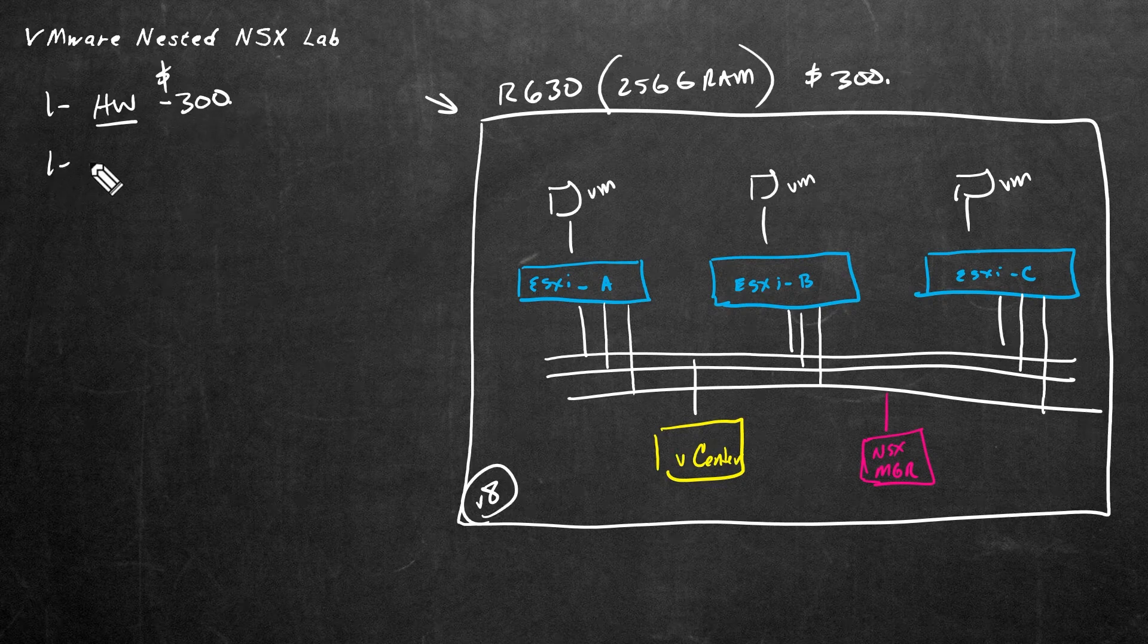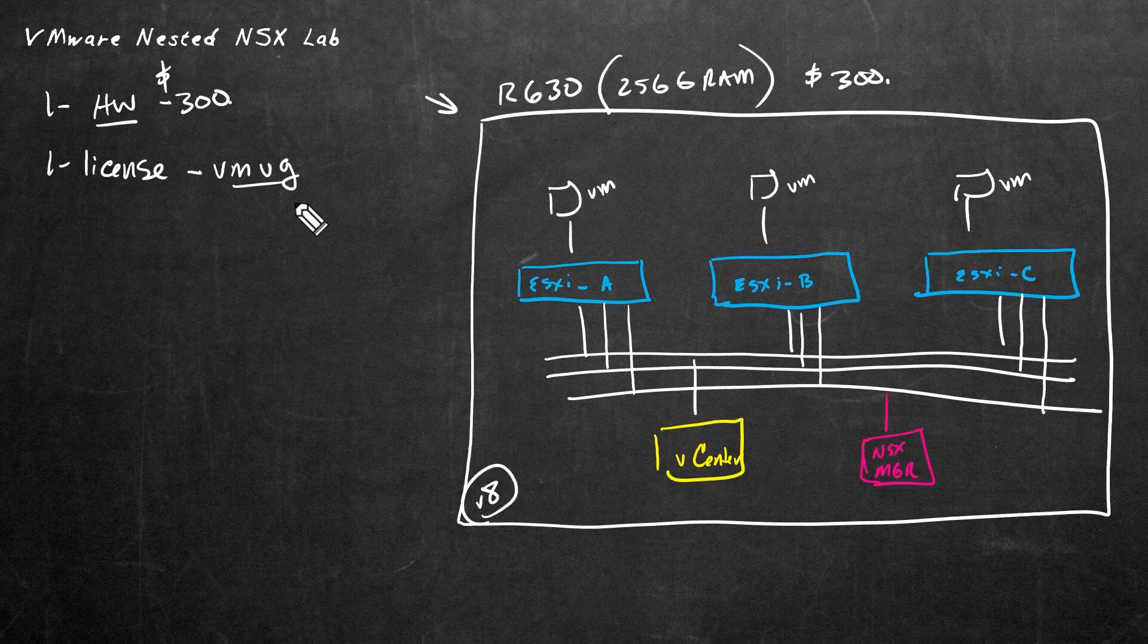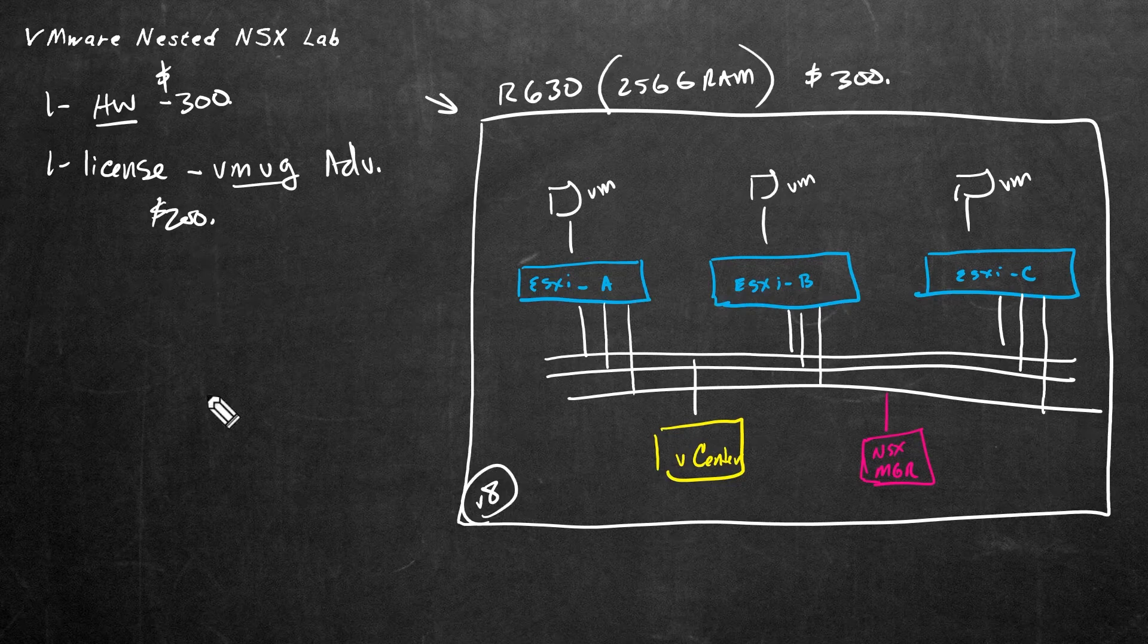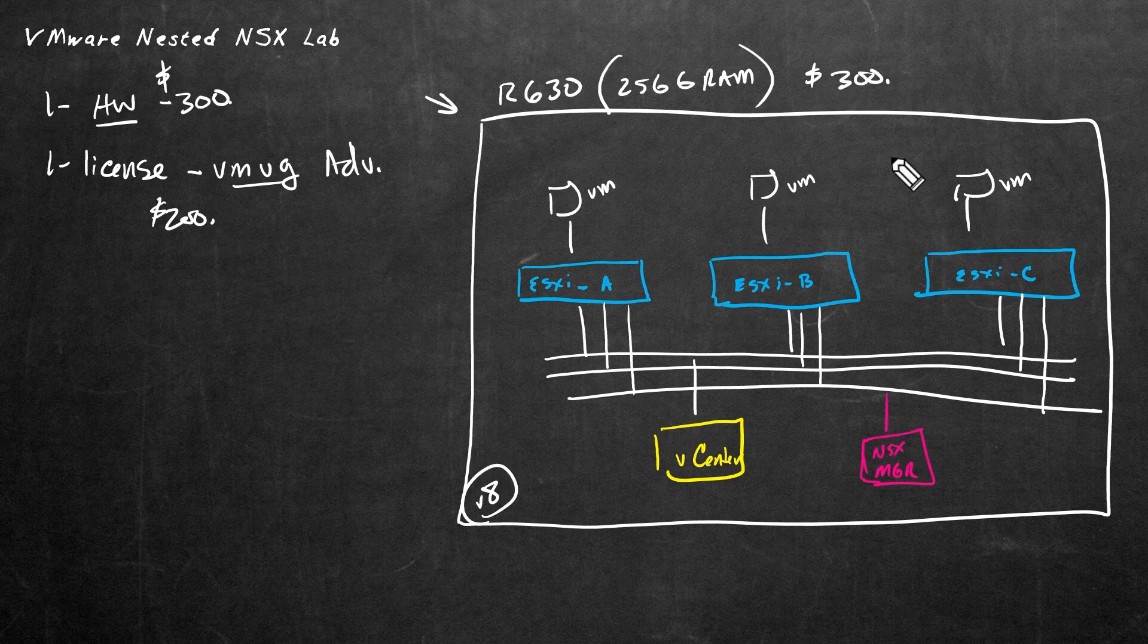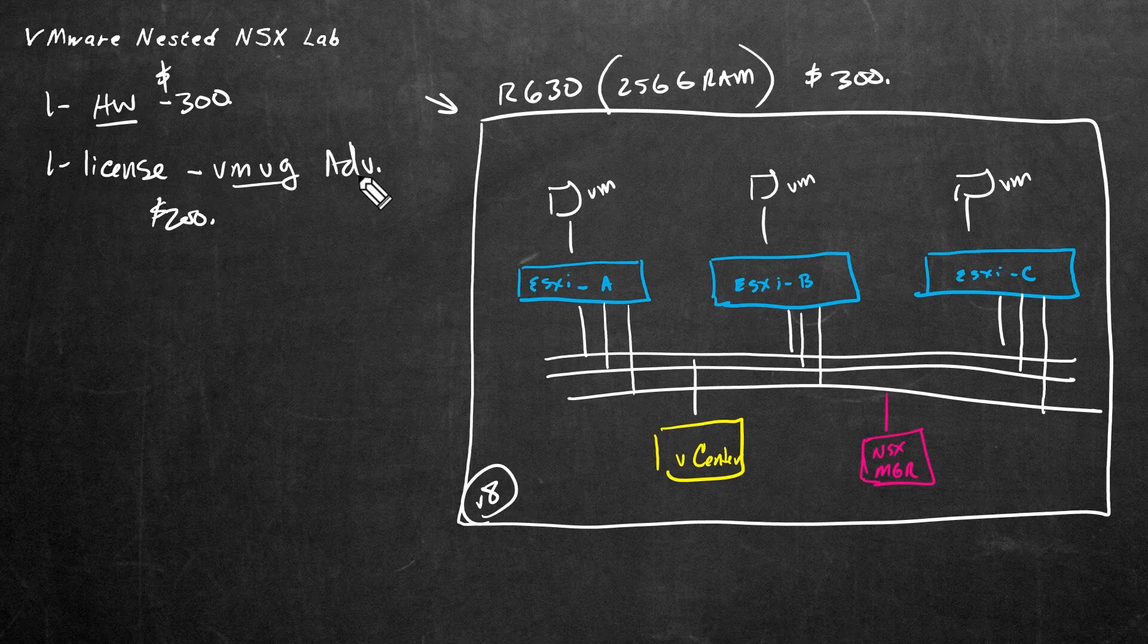So the hardware might be around $300. And one of the great answers there for licensing is to use VMUG Advantage. Now, VMUG is an acronym for the VMware Users Group, and they have an option called VMUG Advantage. And that VMUG Advantage membership is $200 a year. And for that $200, they give you licenses, one-year eval licenses for just a boatload of products, including vCenter, NSX Manager, and the ESXi Hypervisor software.